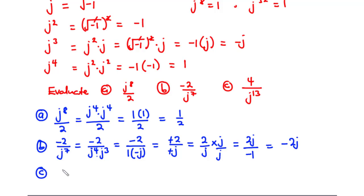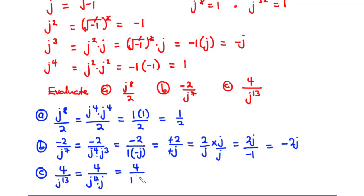For part (c), 4 divided by j to the power 13 — this equals 4 divided by j to the power 12 times j. Since 12 is a multiple of 4, j to the power 12 equals 1, so the denominator becomes 1 times j, which is j. Multiplying numerator and denominator by j gives 4j divided by j squared, which equals negative 1. So the final answer is negative 4j.